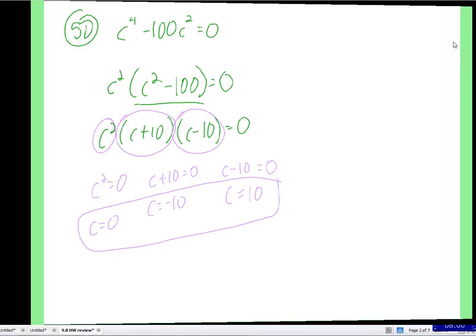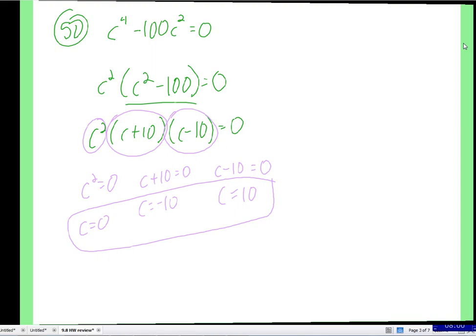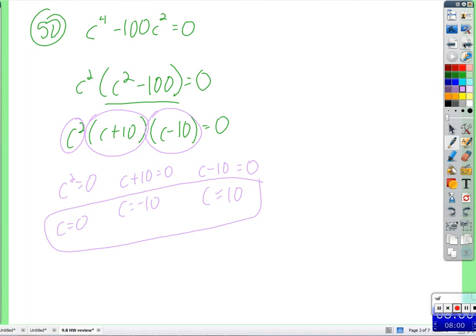Subtract ten, add ten to both sides, and we get these three answers. And if you look at the answer for number fifty back here, you get zero and plus or minus ten. That's all they're saying. Positive and negative ten both came out of the solutions. There you go.